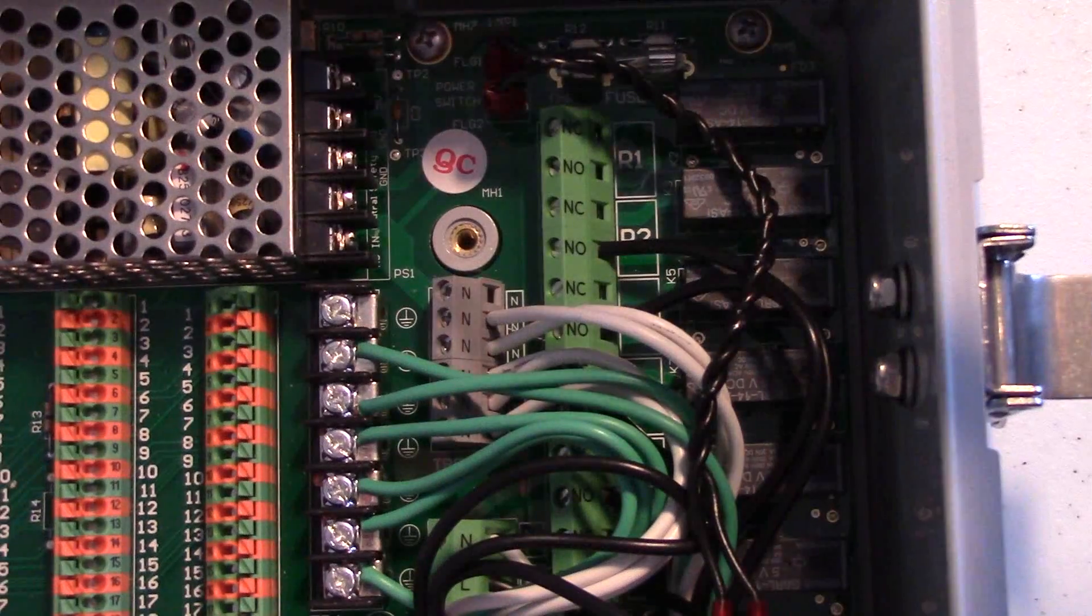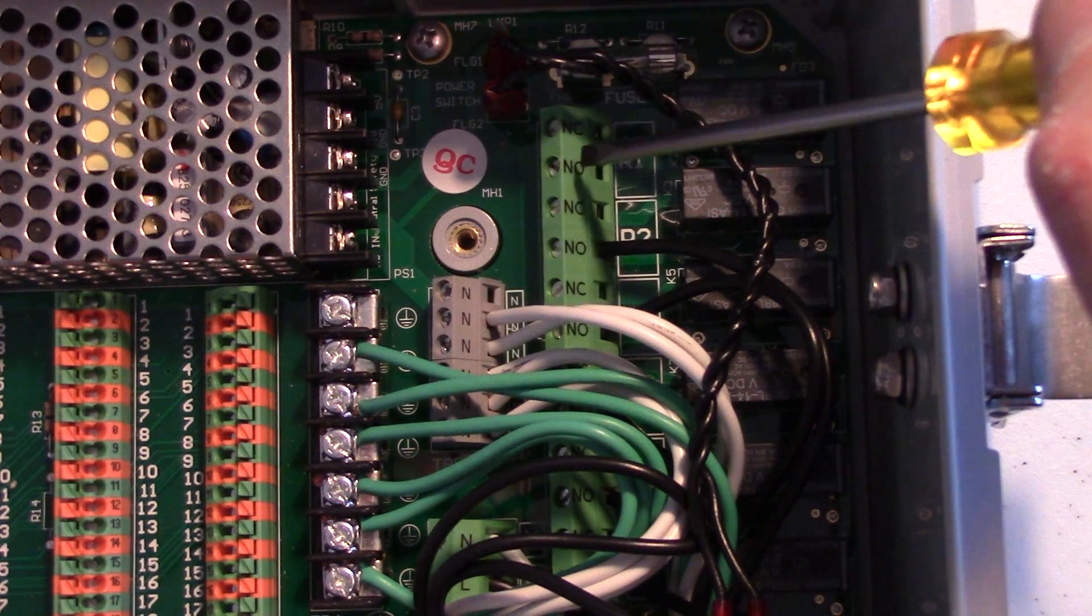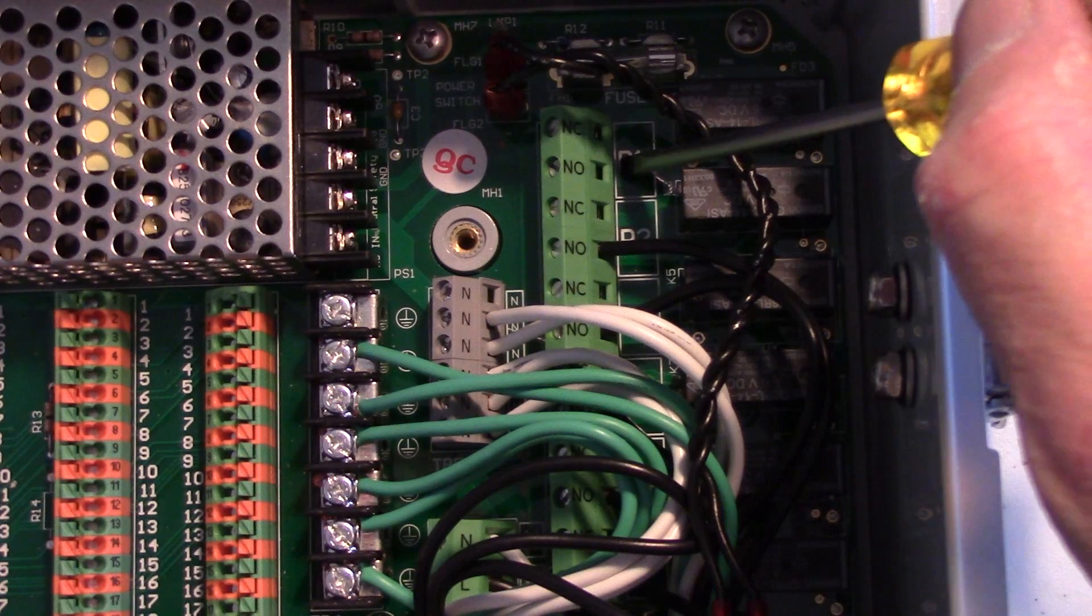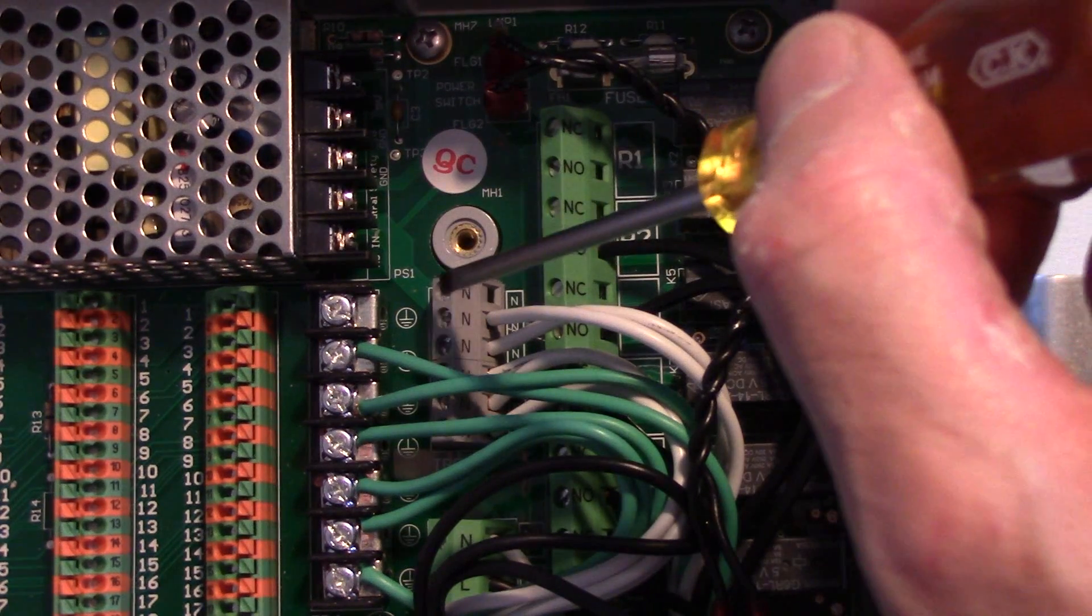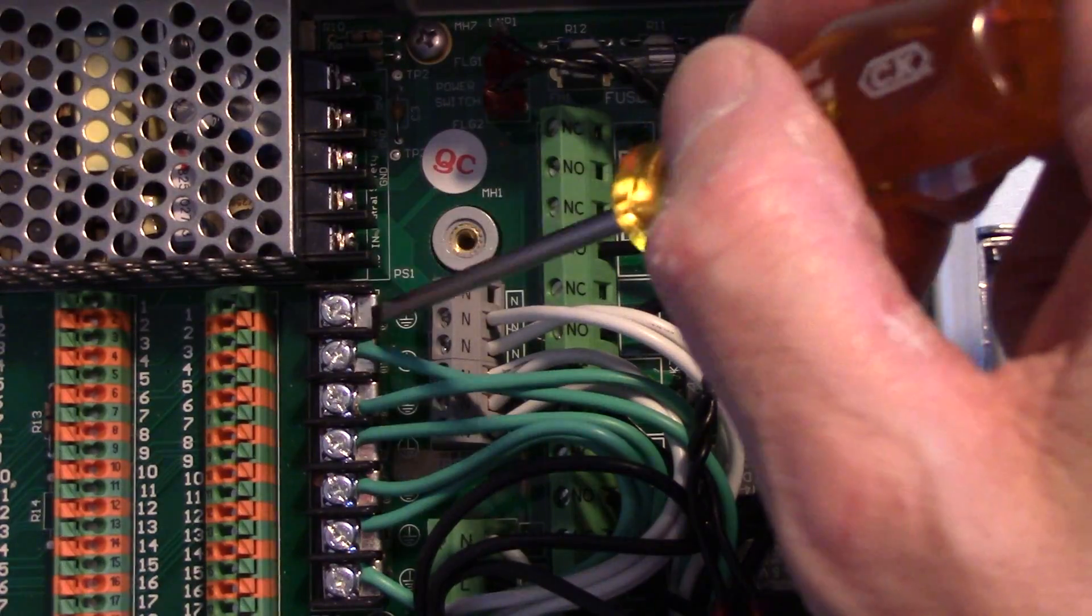Here's a closer look inside the controller where we'll be wiring the solenoid valve. One of the wires will be going to the normally open of R1. Another wire will be going into TB5, and the ground will be wired to TB4.